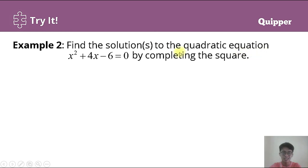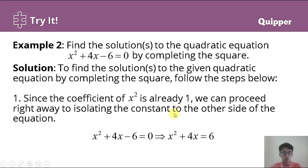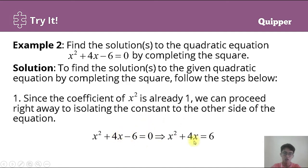Example 2: Find the solution to the quadratic equation x² + 4x − 6 = 0 by completing the square. To find the solution, we follow these steps. Since the coefficient of x² is already 1, we proceed to isolating the constant to the other side. Transposing −6, we get x² + 4x = 6, with a change of sign.